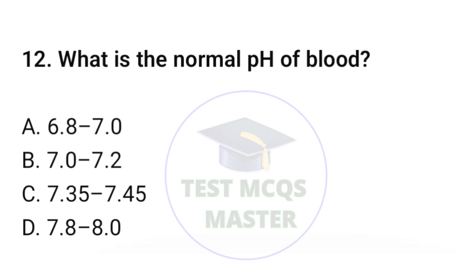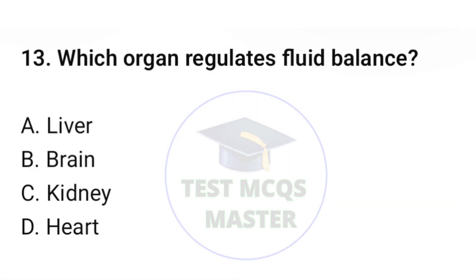Question number twelve: What is the normal pH of blood? The correct option is C: 7.35 to 7.45. Question number thirteen: Which organ regulates fluid balance? The correct option is C: kidney.